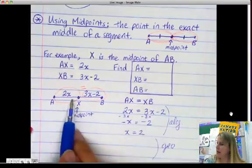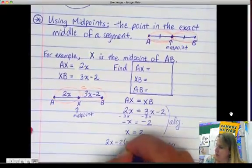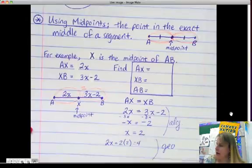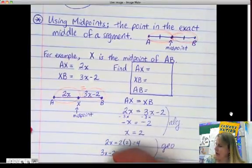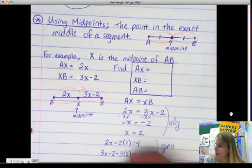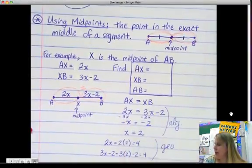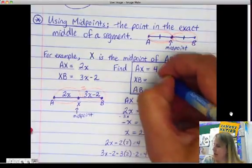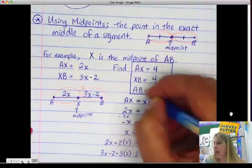So, AX is 2X. So, 2X equals 2 times 2, which is 4. Now, we're going to plug it into the other side. 3X minus 2 equals 3 times 2 minus 2, which is 6 minus 2, which is also 4. So, AX is 4. XB is 4, which means that AB has to be 8.